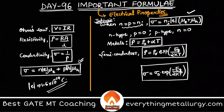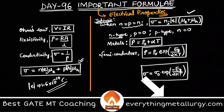For extrinsic semiconductors, we dope with either group 3A or group 5A elements. In n-type semiconductors we dope with 5A elements — electrons are the majority carriers and holes are negligible, so p ≈ 0. In p-type semiconductors we dope with 3A elements — holes are the majority carriers and electrons are negligible, so n ≈ 0.